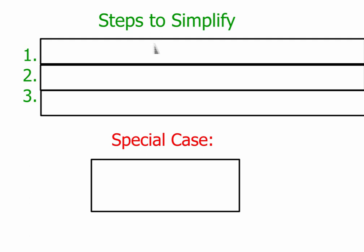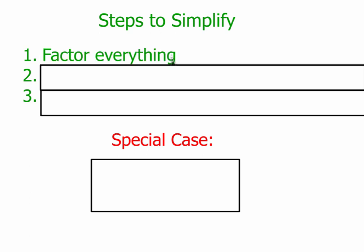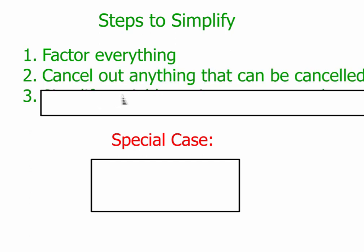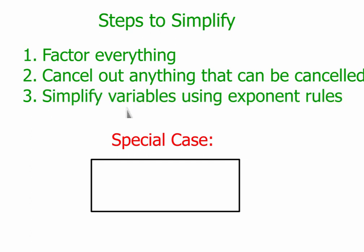There's some steps that we want to follow. Our first step is going to be to factor everything. Anything that can be factored, we need to factor. We need to factor the top of the fraction, the bottom of the fraction, factor everything. Then we're going to cancel out anything that can be canceled. Sometimes we'll have binomials that can be canceled, sometimes we'll have numbers that cancel out. We just want to cancel out anything that can be. And finally, simplify your variables using exponent rules.